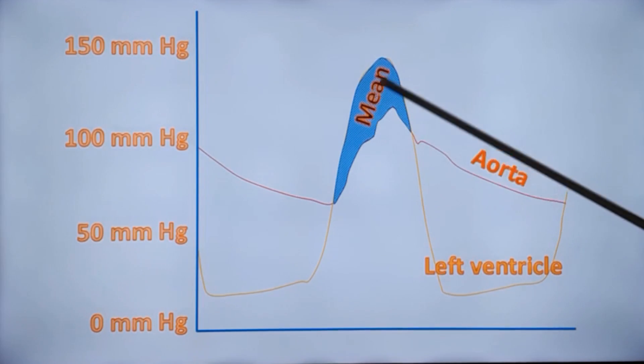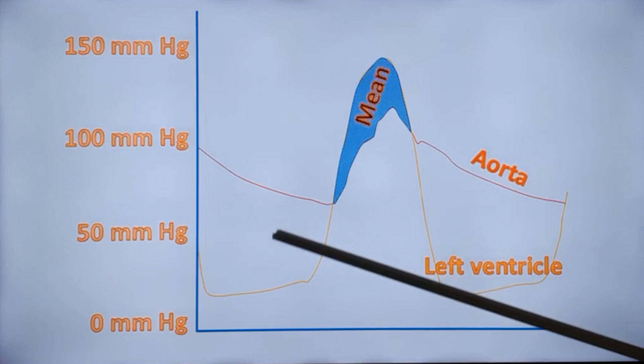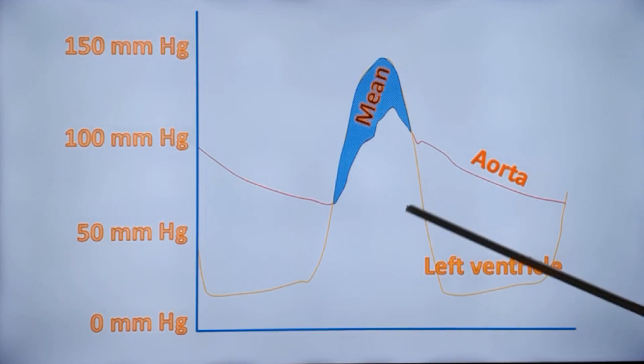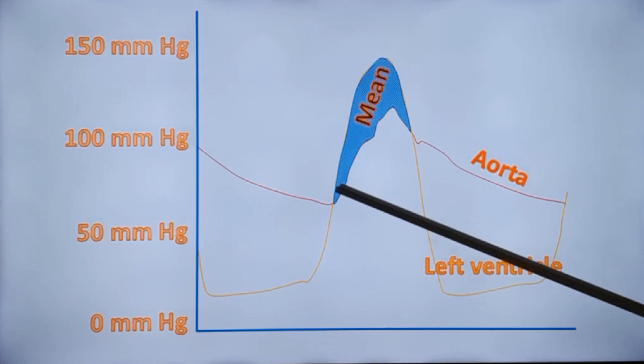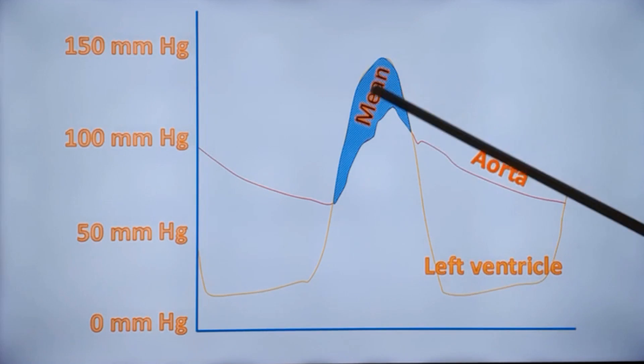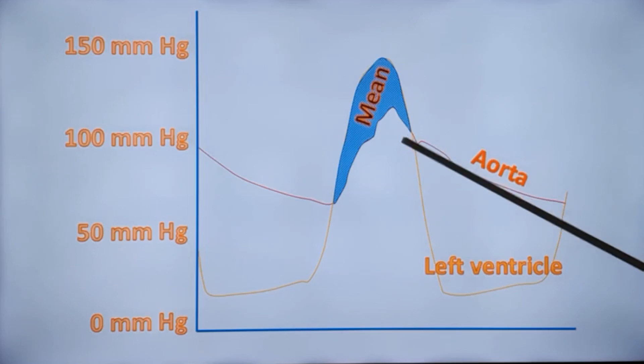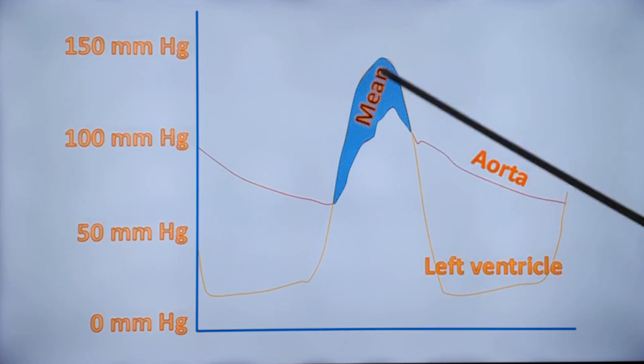So mean gradient, earlier it used to be measured by planimetry. The tracing will be printed out on graph paper and a device known as a planimeter is used to measure the mean gradient. But now nobody bothers about planimeters. The electronic equipment within the cardiac catheterization recorder will give you the mean gradient.